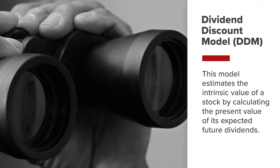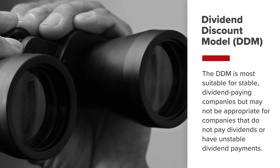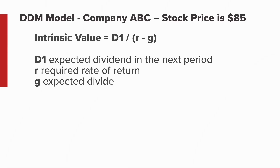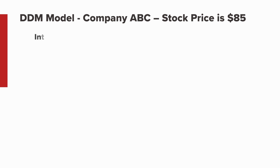The dividend discount model, or DDM, estimates the intrinsic value of a stock by calculating the present value of its expected future dividends. The DDM is most suitable for stable dividend-paying companies, but may not be appropriate for companies that do not pay dividends or have unstable dividend payments. The intrinsic value formula is D1 divided by (R minus G), where D1 represents the expected dividend in the next period, R represents the required rate of return, and G represents the expected dividend growth rate.